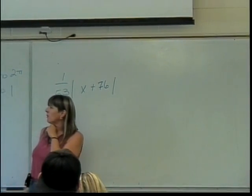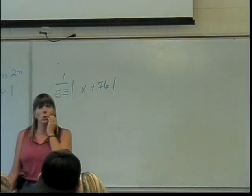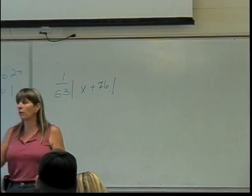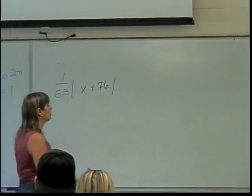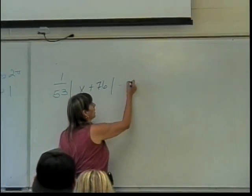And then I'm supposed to shift down 13 units. Is that vertical or horizontal? That's vertical. Vertical stuff is where? Inside or outside? Outside. And so down would be? Minus 13.